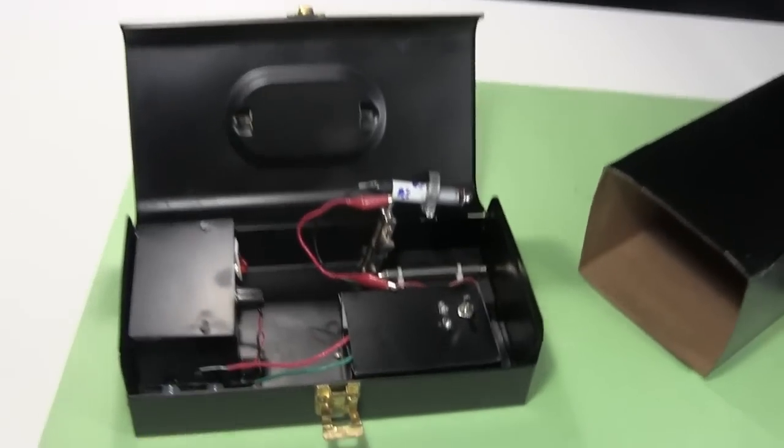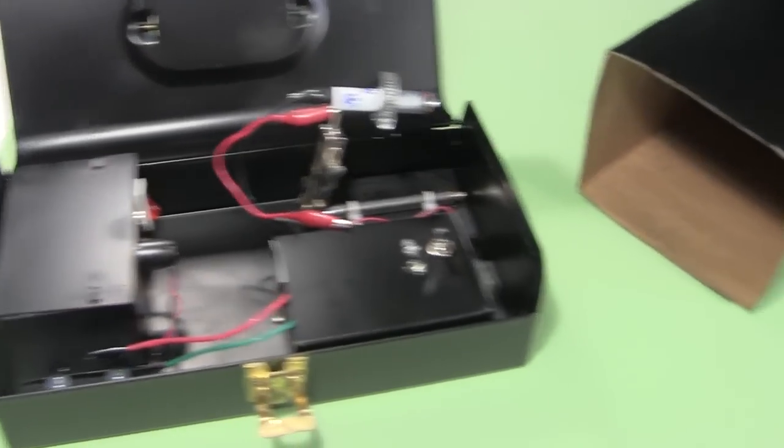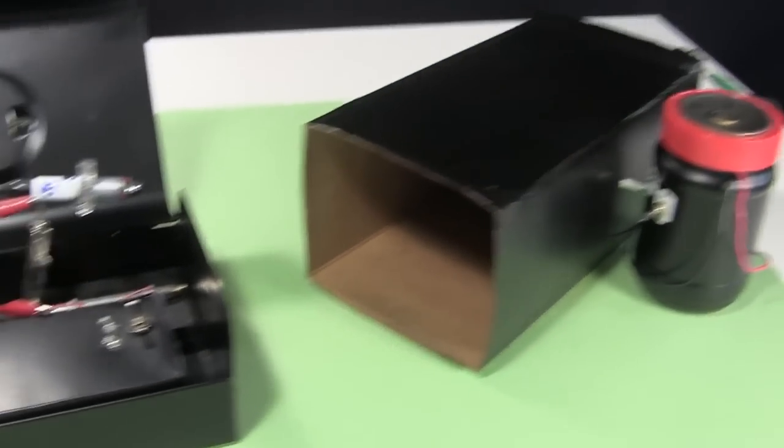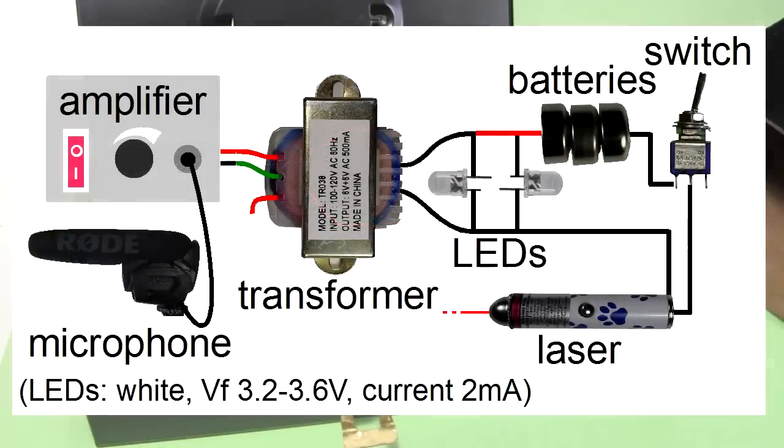The device consists of a transmitting side and a receiving side. The transmitting side is fairly simple. A microphone is plugged into an amplifier, and from there it goes to a transformer, and past two LEDs. From there there are batteries for the laser, an on off switch, and finally the laser itself.